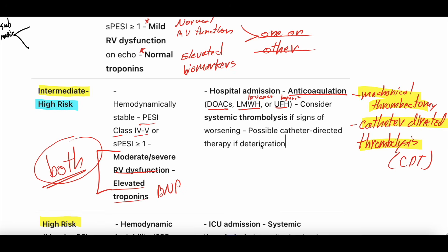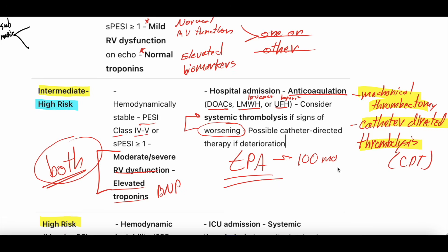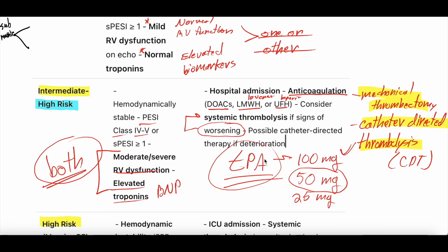If a patient who has intermediate high risk is worsening, there is some evidence to suggest systemic thrombolysis — TPA. TPA dosing is debated: the active guideline recommendation is 100 milligrams, though many say 50 milligrams may suffice, and some go as low as 25 milligrams. If someone is intermediate high risk and starts getting worse, you should consider thrombolysis with TPA at 50 or 100 milligrams.